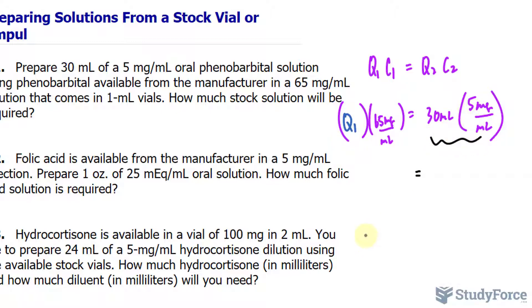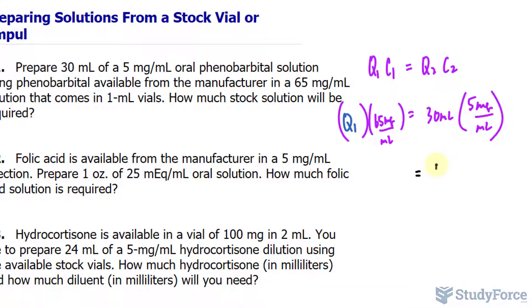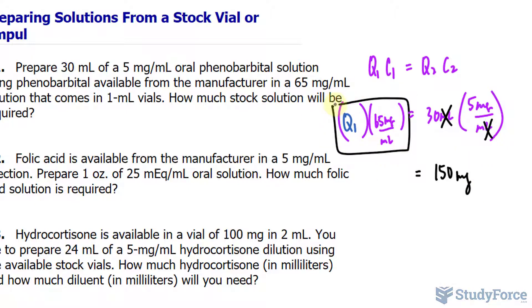By solving for Q1, I'll multiply these two factors out using our calculator — 30 times 5 — and you end up with 150, where the milliliter units cancel out, leaving 150 milligrams on the right side of the equation. On the left side of the equation, this part hasn't changed.